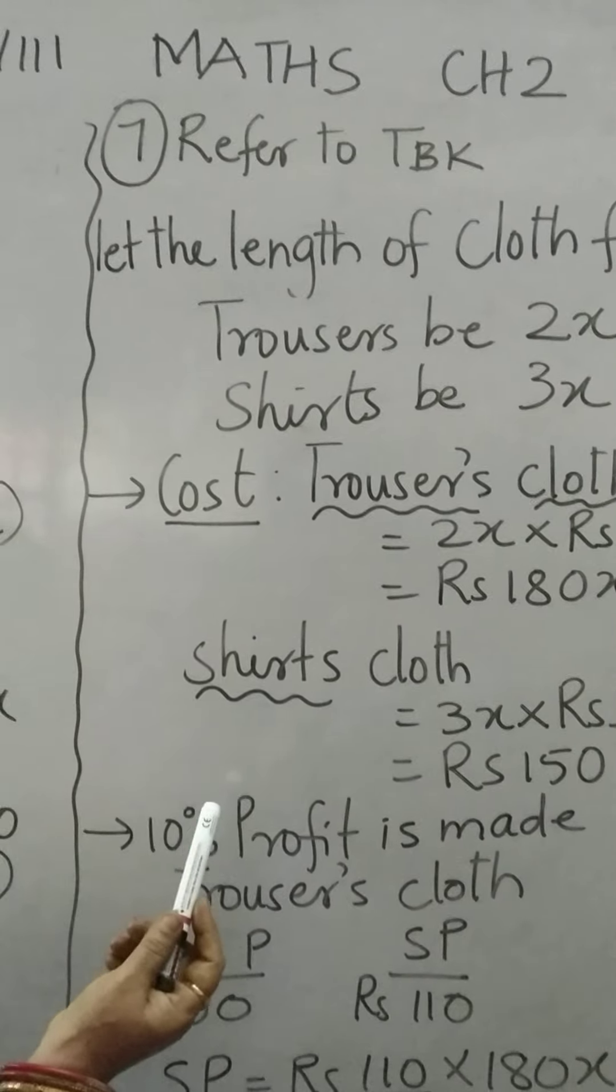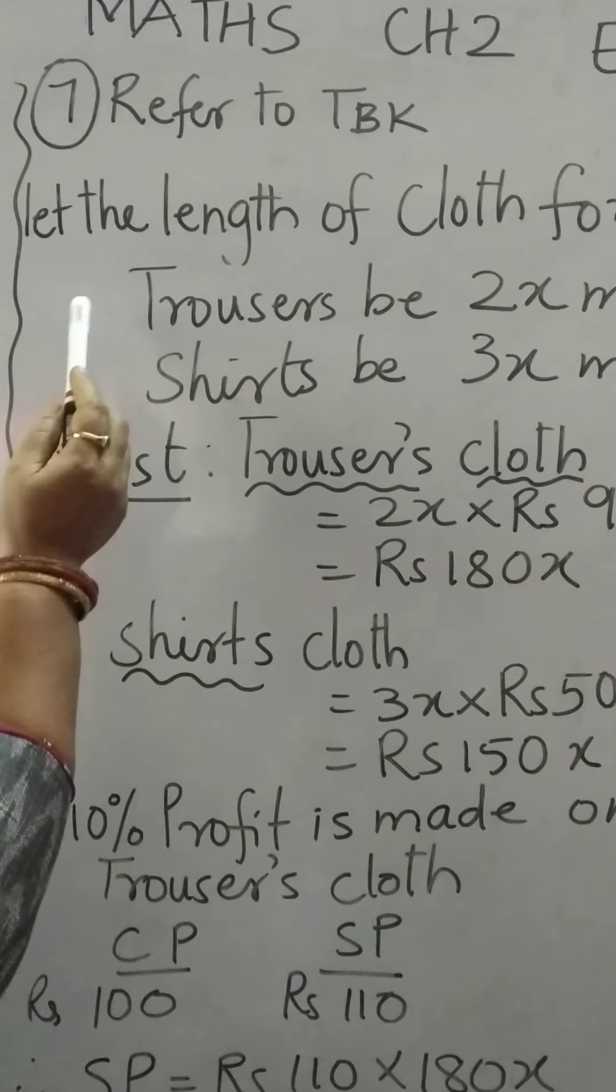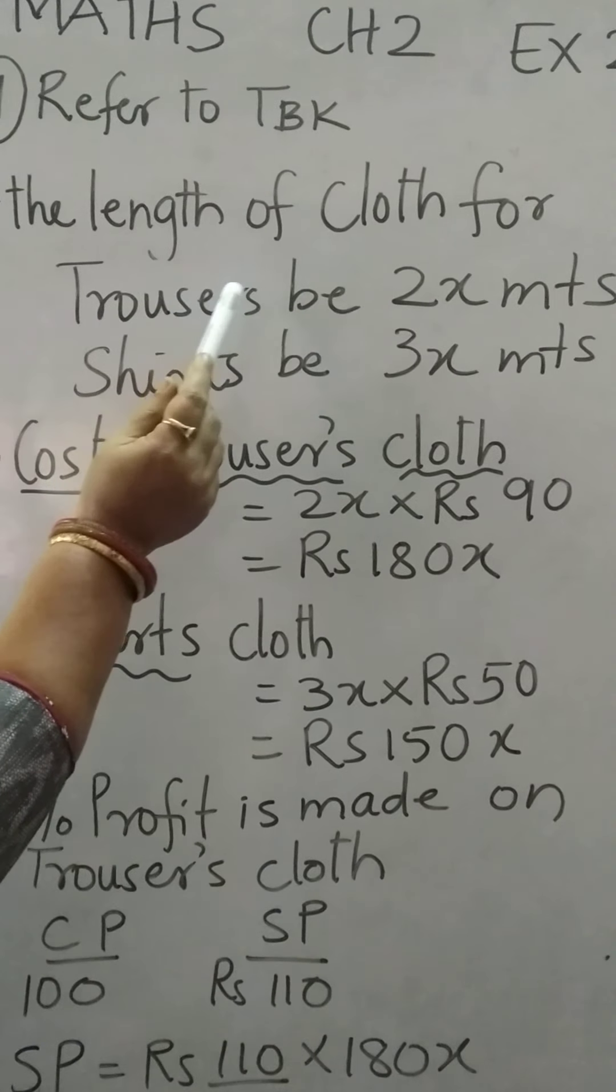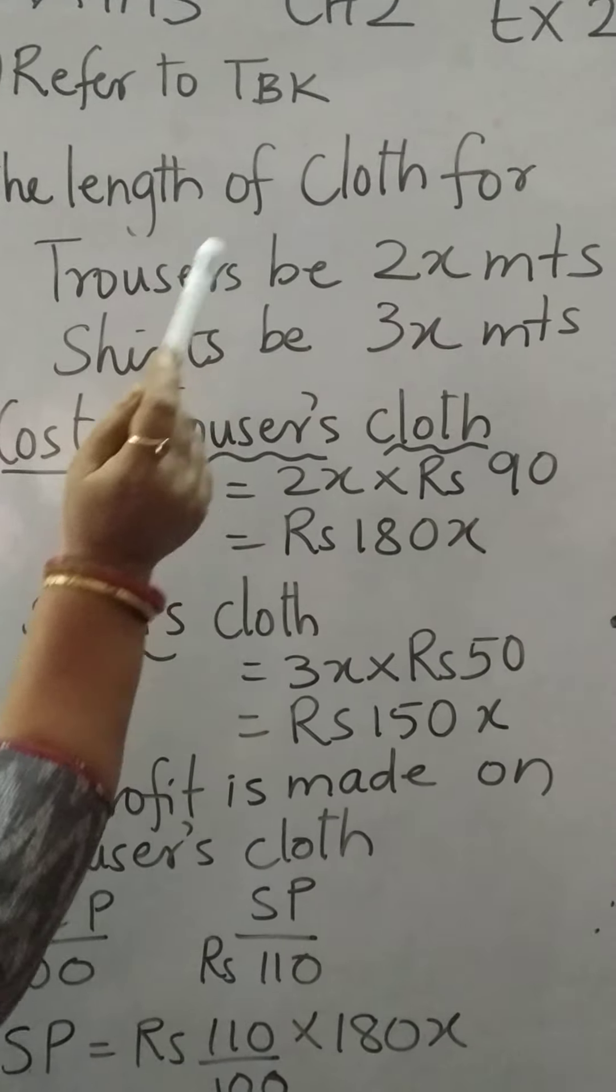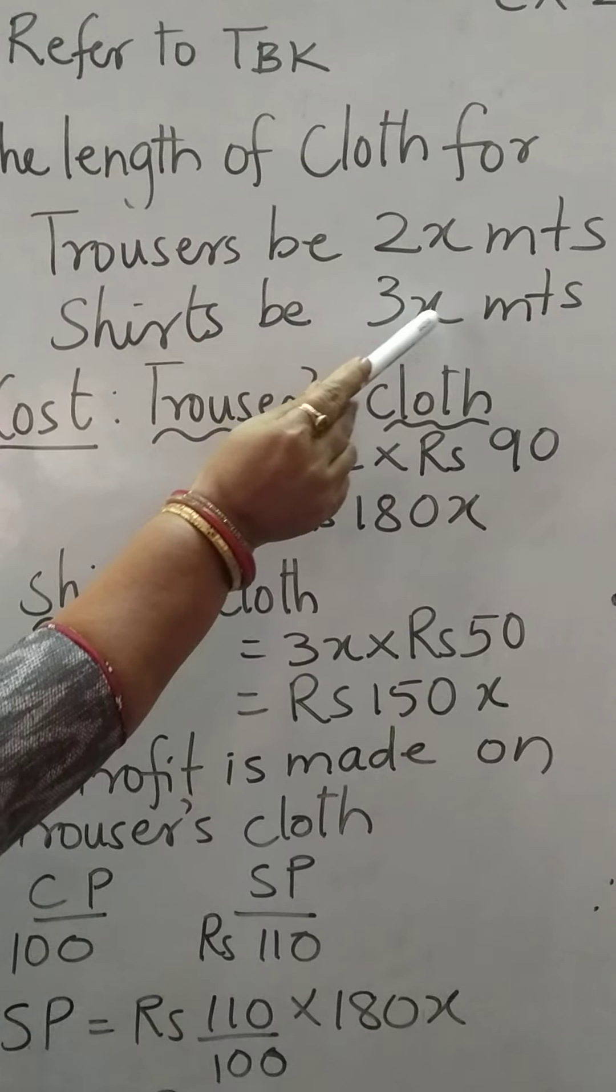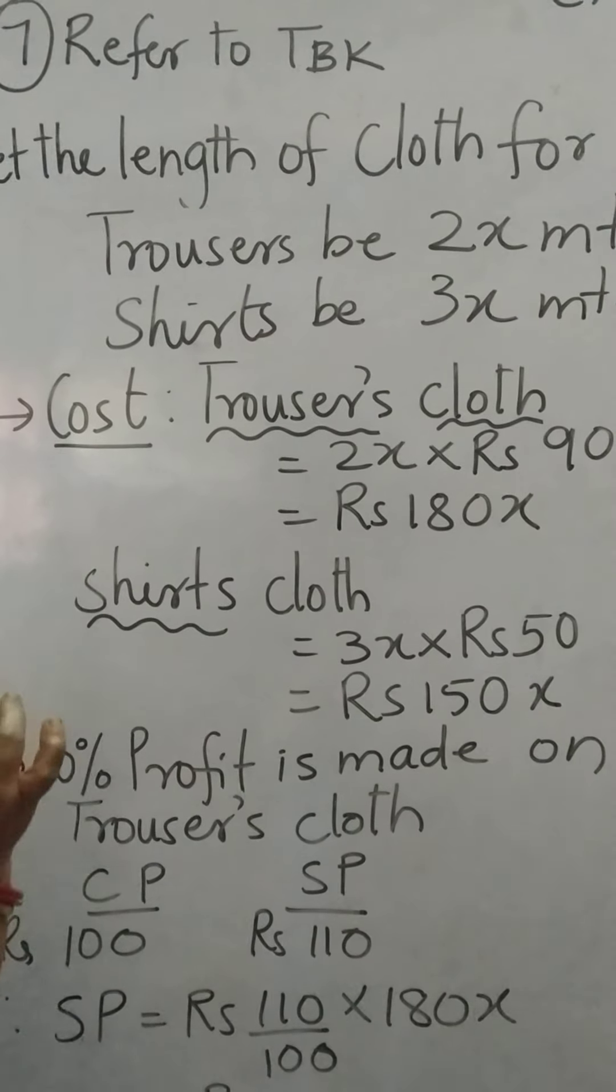Now we go to question 7. Please read the question. It says that let the length of the cloth for trousers be 2x meters, shirts be 3x meters. 2x, 3x, clear?